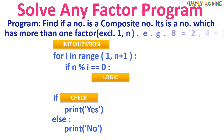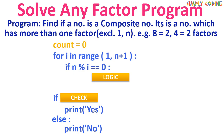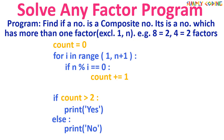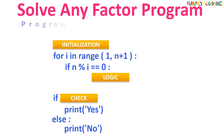Write a program to check if a number is a composite number. A composite number is a number which has more than two factors, excluding 1 and itself. In initialization we have count initialized to zero. In the logic section we increment count. In the check section we check if count is greater than 2, as we need to discard 1 and the number itself.